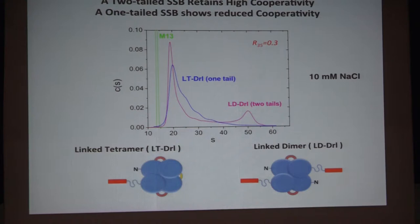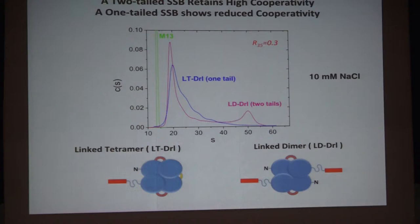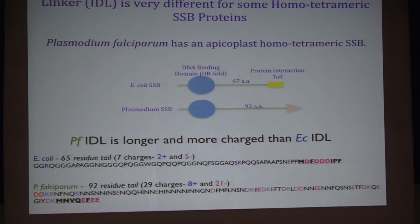We've done a series of experiments linking either two or all four subunits of the tetramer, making constructs with just one tail or two tails. Both constructs still show cooperativity, although the construct with only one tail has much less cooperativity than constructs with two or four tails — again indicating a role for the C-terminal tails in cooperativity.